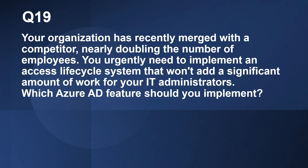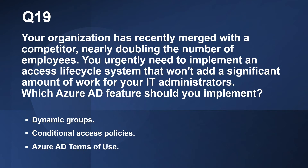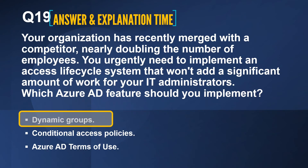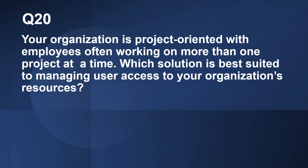Question number 19. Your organization has recently merged with a competitor, nearly doubling the number of employees. You urgently need to implement an access lifecycle system that won't add a significant amount of work for your IT administrators. Which Azure AD feature should you implement? The options are dynamic groups, conditional access policies, and Azure AD terms of use. The correct answer is dynamic groups. Dynamic groups use attribute-based rules to determine who is a member of a group, thereby reducing the administrative overhead of adding and removing users.